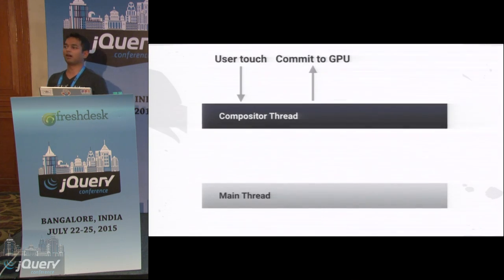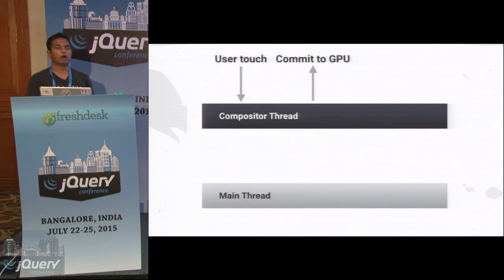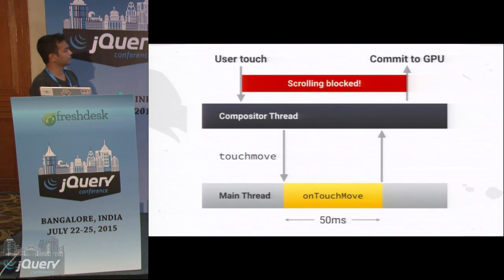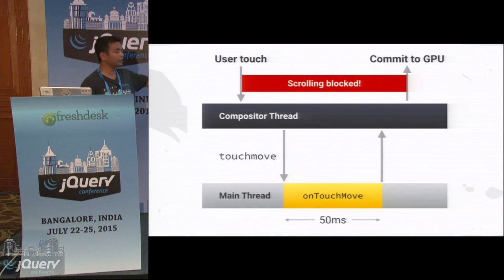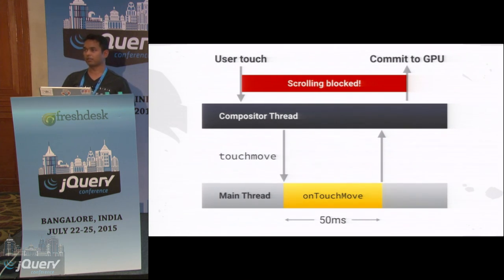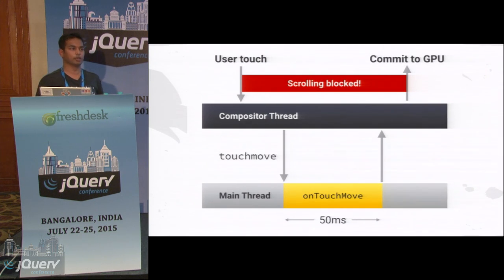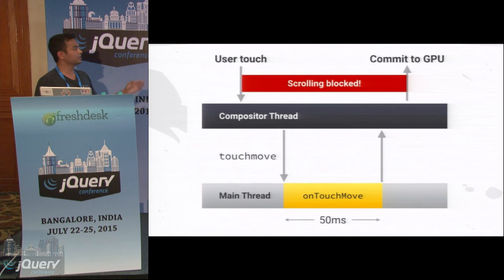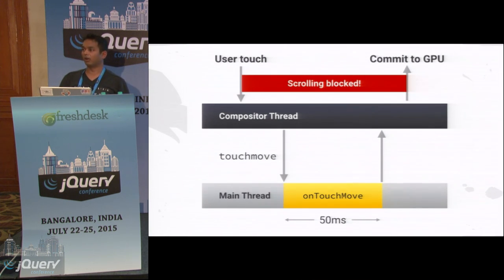This is an example of what happens when you are not debouncing your input handlers. A touch is triggered on your mobile device, the compositor thread gets that event, and because you're listening to touch-move, your JavaScript gets executed — if it takes 50 milliseconds, which is quite huge, the scroll is blocked for that user and he won't be able to do anything — causing jankiness in your application.